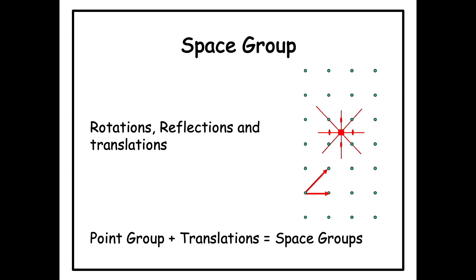The other group we are concerned with is called the space group. In defining the point group, we left out translations. In the space group, we include all symmetry operations: rotations, reflections, as well as translations. A space group is really the group of all symmetry operations of a lattice — point group operations plus translations. Lattices will be classified on the basis of these two symmetry groups, which we take up in the next video. Thank you.